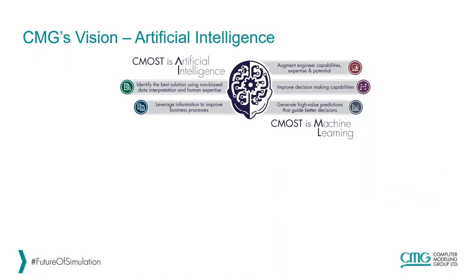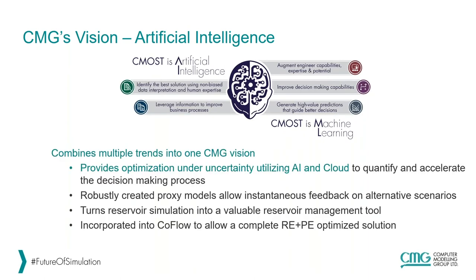CMG's vision on the artificial intelligence side is really encapsulated entirely within the CMOS program, although AutoTune does capture part of that AI side of things. CMOS provides optimization under uncertainty, utilizing both artificial intelligence in the cloud as well as your local systems to essentially accelerate and assist the decision-making process. CMOS itself is incorporated into our CoFlow product, which I'll talk about a little bit later, to provide a complete reservoir engineering plus production engineering optimized solution.